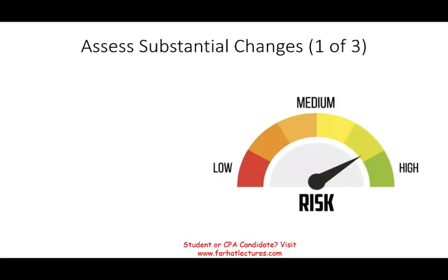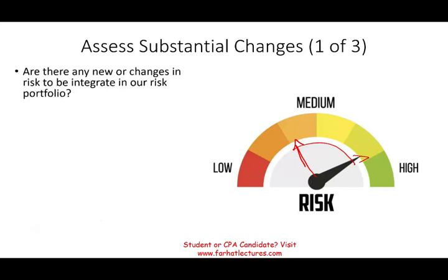Starting with assess substantial change. In the prior session, we learned how to identify risk, how to prioritize risk, and how to assess risk. But you don't do it once and stop. You want to assess any substantial changes because your environment is constantly changing. Maybe your risk was at one level, and now it's higher. So you have to be careful in determining what's going on — constantly look out for those risks.